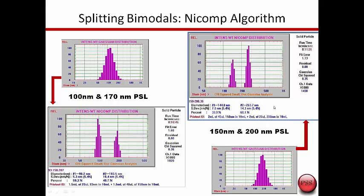The example on the right is showing similar results for samples that are at 150 and 200 nanometers. If we used a Gaussian distribution, it would merge it into a single peak. But when we applied the NICOMP algorithm, we split it into the two peaks at 150 and 200 nanometers. This kind of resolution is unique to the NICOMP and is one reason people prefer to use this when measuring complex samples.